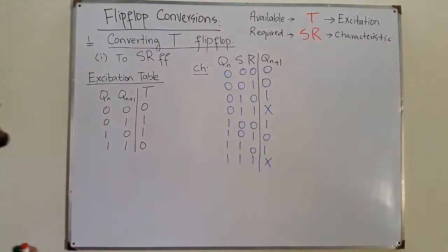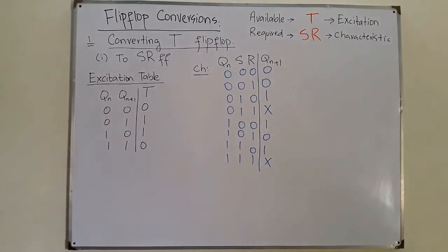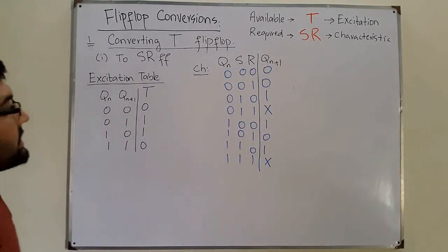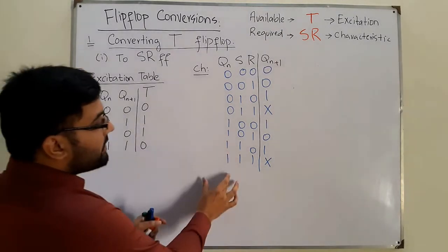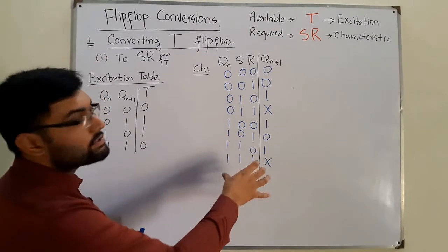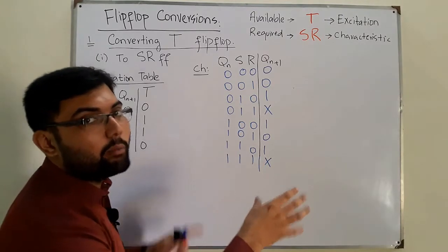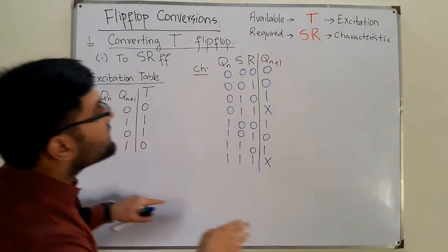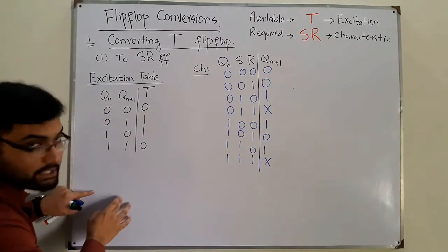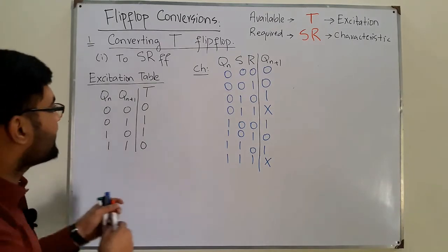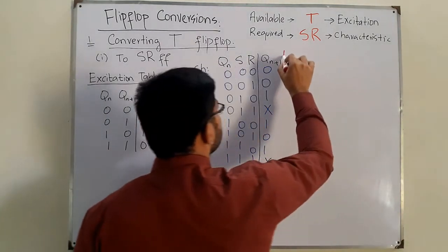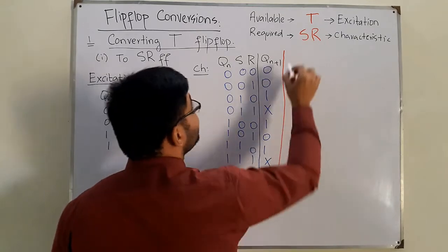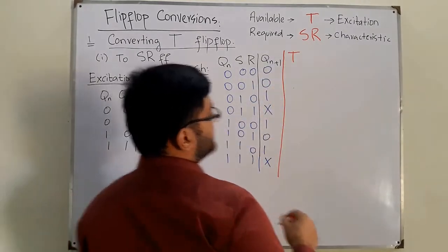Now you make the combinational table where you match Qn and Qn+1 from the characteristic table of the required flip-flop with the excitation table of the available flip-flop. From this you come to know about the input T.